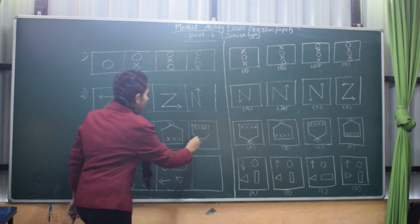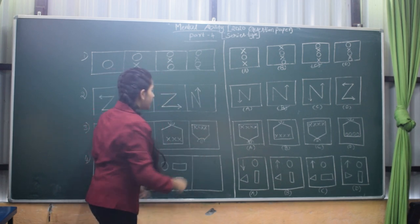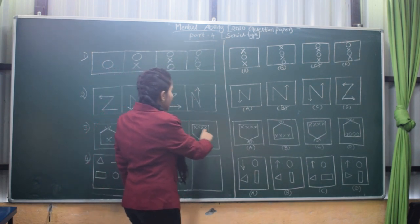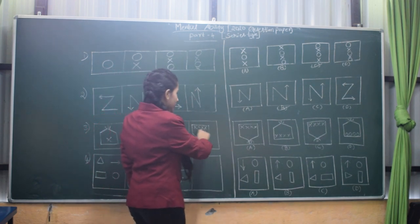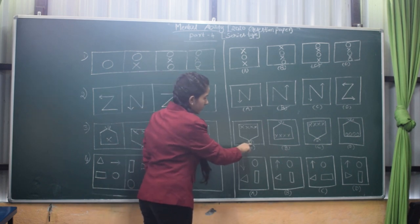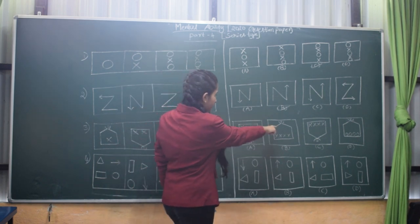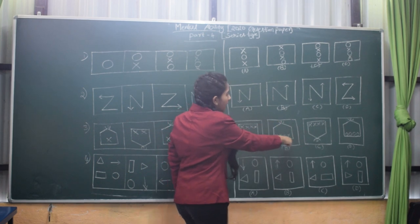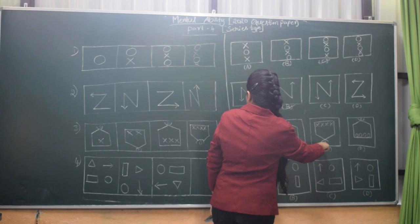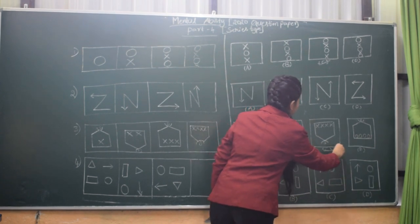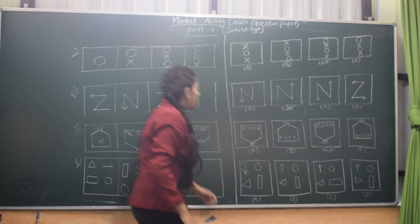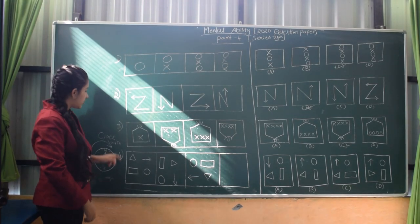We will write the figure and compare it with the answer figures. In the first answer figure we cannot choose it because instead of a circle there is a square. In the second figure we cannot because it is in the upward position. The third figure is the answer — it is in the downward direction as we want. The fourth option cannot be the answer because instead of X's there are circles. So the answer is C.